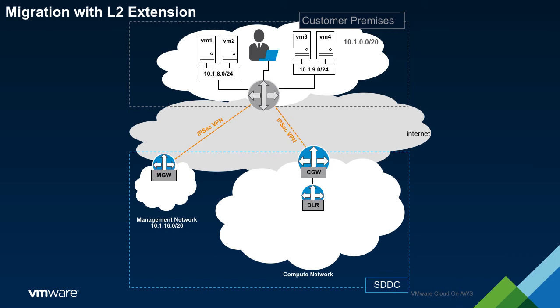When using HCX as a migration tool, the first step is to activate and deploy the HCX service. HCX requires components in both the SDDC and the on-prem environment. While the installation within the SDDC is automated, the end user is required to install and configure the on-prem appliances. Once HCX is installed and configured, the next step is to extend networks to the SDDC.